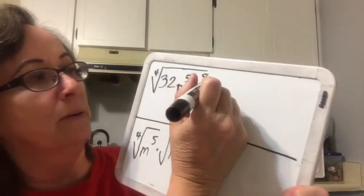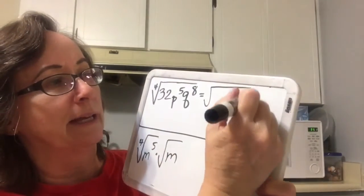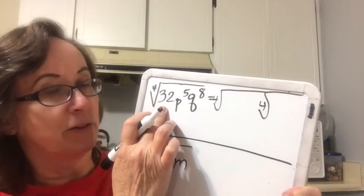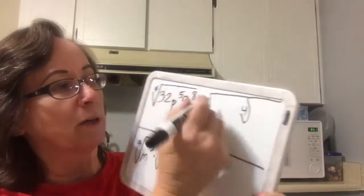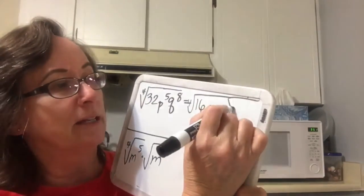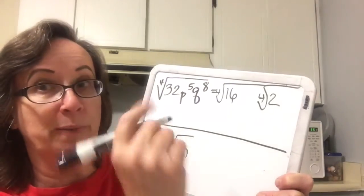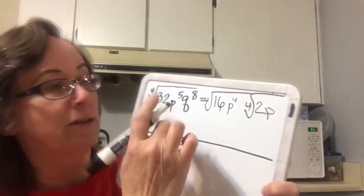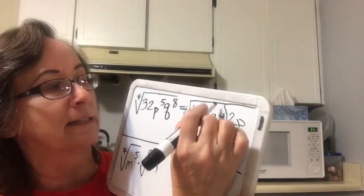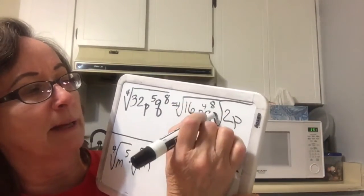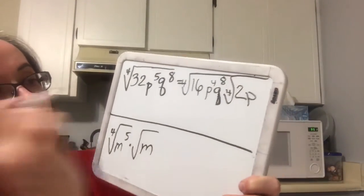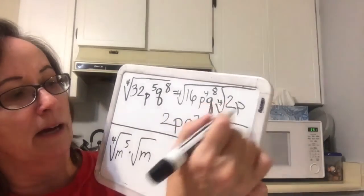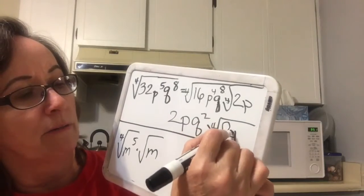Here we're going to split these up into a perfect 4th root and a leftover 4th root. 32 does have a perfect 4th in it — 32 is 2 to the 5th — so we're going to put 16 in the perfect one and 2 left over in the other. p to the 5th has a p to the 4th in it, so we put the p to the 4th and the leftover p on the other side. And q to the 8th is already perfect. This is going to come out as 2pq squared, and we tack on the remainder radical.